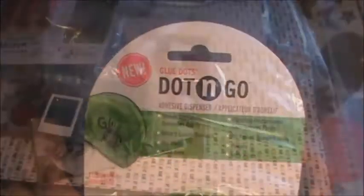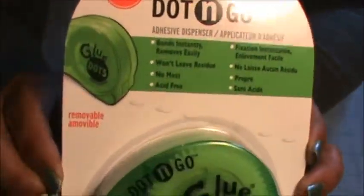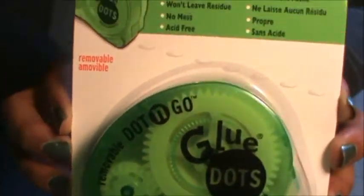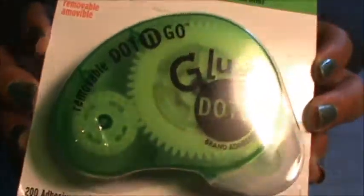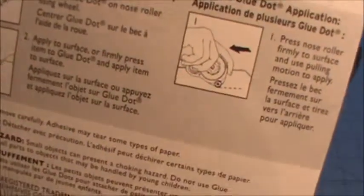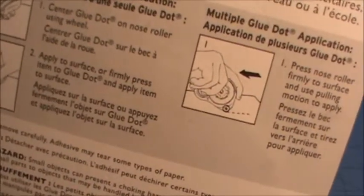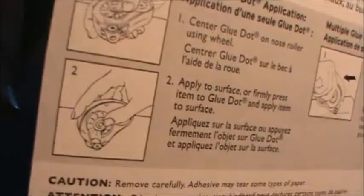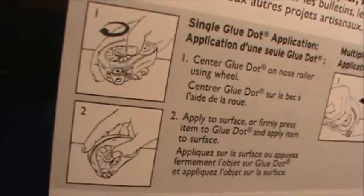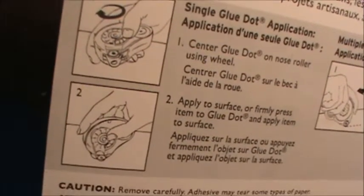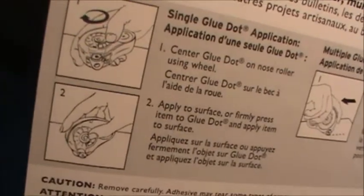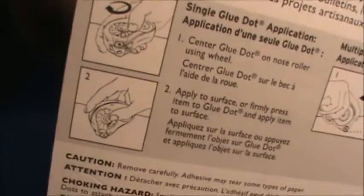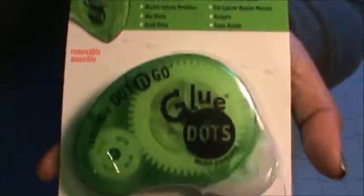The first thing I got is this Dot and Go, so it's for your glue dots and it's like a runner just like our tape runners. You can do multiple lines of these glue dots or you can do individual, just push it onto the spot you want. That's kind of nice because sometimes when I try to do the glue dots it sticks all over my fingers, and I think this would be pretty handy.